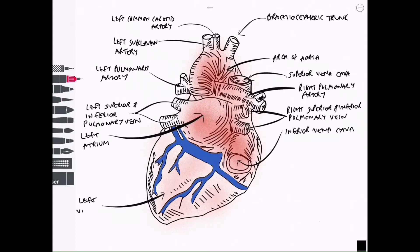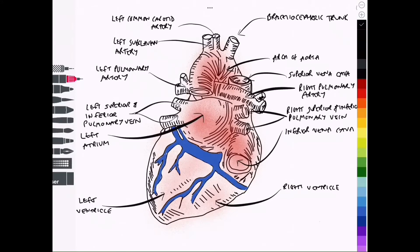Then of course moving down into the ventricles, we've got the left ventricle. Most of the left ventricle can be seen from a posterior view and a small portion of the right ventricle can be seen from a posterior view.